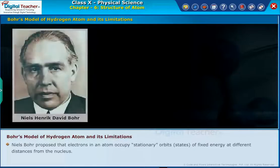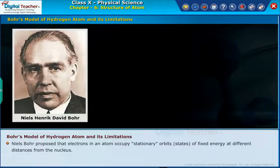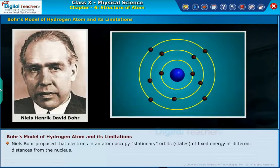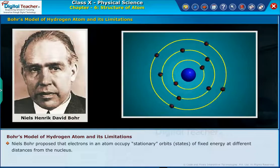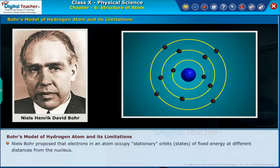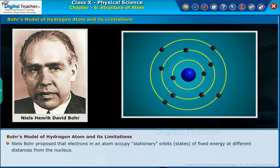Let us know about Bohr's model of hydrogen atom and its limitations. Niels Bohr proposed that electrons in an atom occupy stationary orbits or states of fixed energy at different distances from the nucleus.